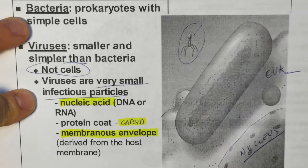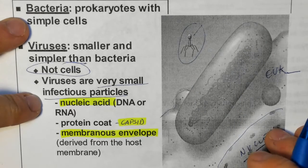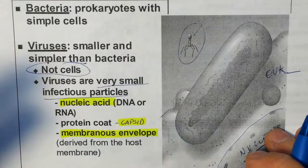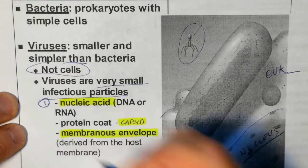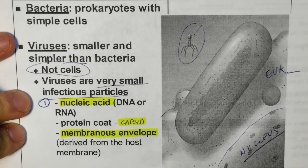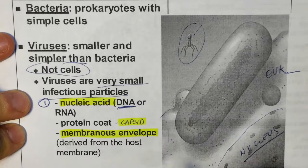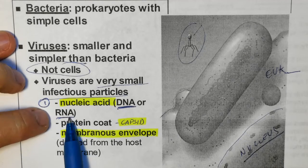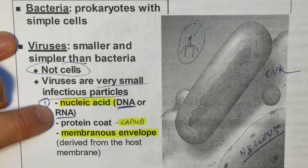What are the viruses made out of? They are always going to have at least two components. Component number one, they are always going to have a nucleic acid — the genetic material that is going to carry information. And that can be either DNA or RNA. Viruses are the only ones that can have RNA as a nucleic acid to carry the genetic information.